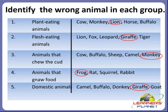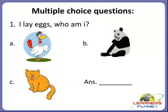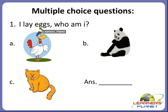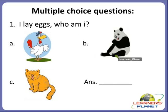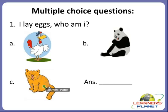All the others are domestic animals. Now we will move on to the next activity: multiple choice questions. I will read the first question. The first question goes as: I lay eggs — who am I? See the options: is it a hen, a bear, or a cat? Yes, children, who lays eggs? It is a hen. A is the correct option. Hens lay eggs.